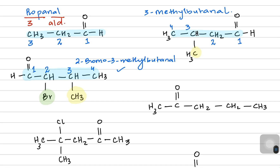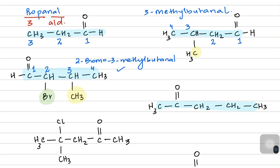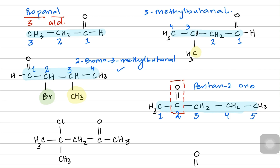Moving on, we have a ketone. I'm highlighting the structure with a blue pen. The carbonyl — shown in the red box — is in the middle of the chain, so it's a ketone. We number from the carbon closer to the carbonyl: carbon one, two (the carbonyl carbon), three, four, five. There's no branch, so we just call it pentan-2-one — a five-carbon ketone with the carbonyl on carbon two.